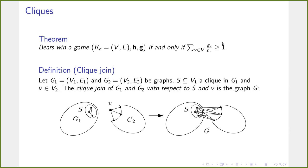We want to use cliques to join two winning graphs into a larger winning graph. Let G1 and G2 be two graphs, with a set S in G1 that induces a complete graph in G1, and a special vertex V in G2. The clique join of G1 and G2 with respect to S and V is the graph obtained by removing V from G2 and connecting every vertex in S with every former neighbor of V. Equivalently, it is the result of inflating V with a clique of size |S| and then identifying it with S in G1.